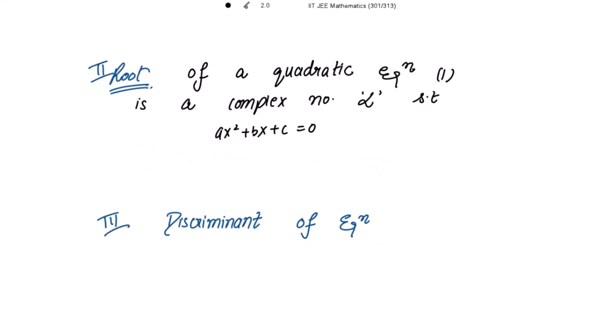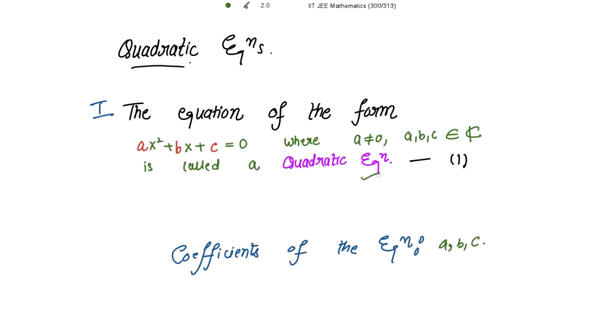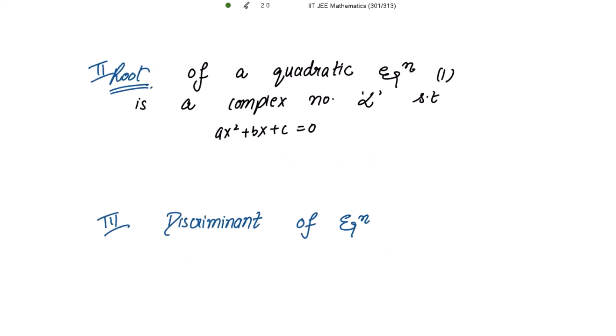Moving on to the root of a quadratic equation: a root of quadratic equation 1 is a complex number alpha such that alpha satisfies this equation. If alpha satisfies this equation, then alpha is a root of the equation, that is, a·α² + b·α + c should be equal to zero.